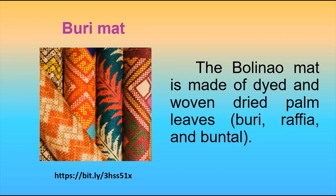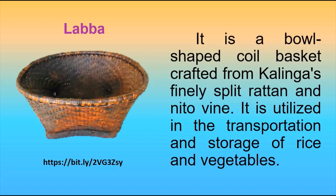Bulinao mat is made of dyed and woven dried palm leaves such as buri, raffia, and buntal. Lava is a bowl-shaped coal basket crafted from Kalinga's finely split rattan and nito vine. It is utilized in the transportation and storage of rice and vegetables.